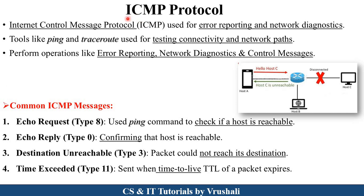The next protocol is ICMP protocol. ICMP stands for Internet Control Message Protocol. The main operations of this protocol are to find out all the errors in a computer network, to diagnose network messages, and to control messages. The first message type is Echo Request — ICMP protocol checks whether a particular host is reachable or not, whether a particular sender device is present or not. For that purpose, it uses the ping command. Echo Reply confirms that a particular host is reachable in the computer network and there are no errors present.